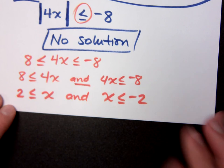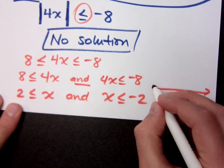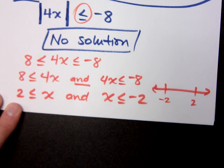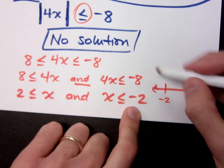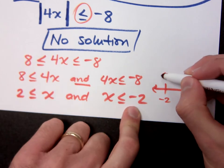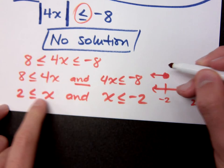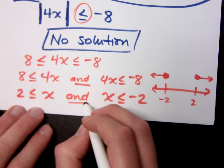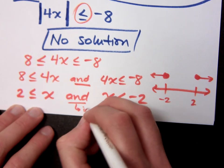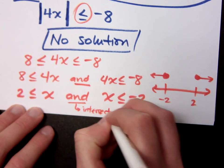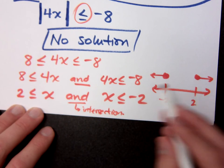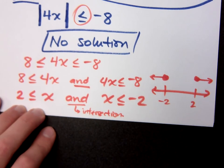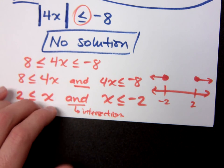But we've got a problem with this, because when you try to graph this, here's negative 2 and here's positive 2. Less than or equal to negative 2 is closed out to the left. X is greater than or equal to positive 2 is closed and out to the right. What does the word and mean? Intersection. Where do these guys intersect? They don't intersect. No solution.